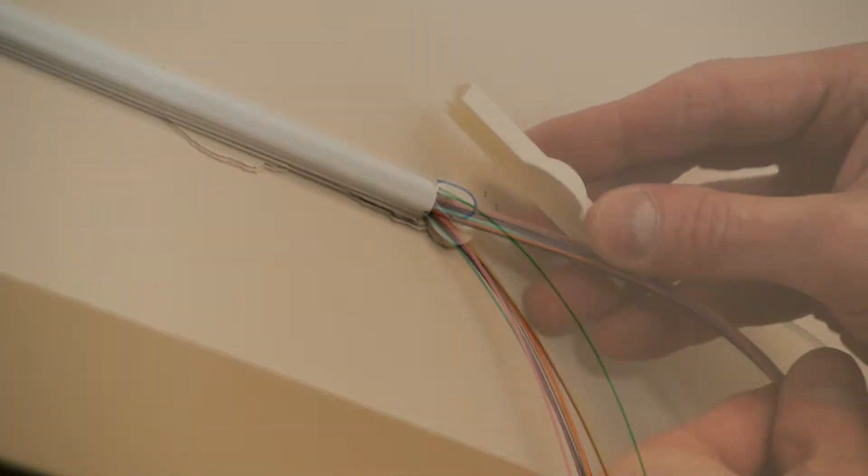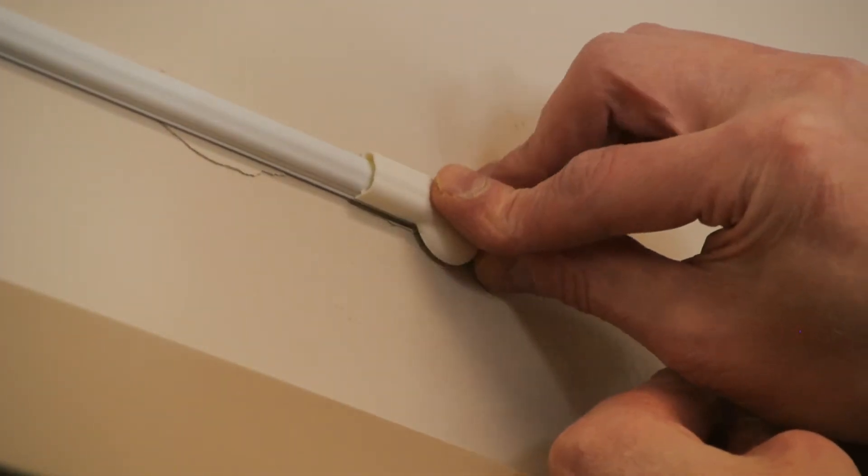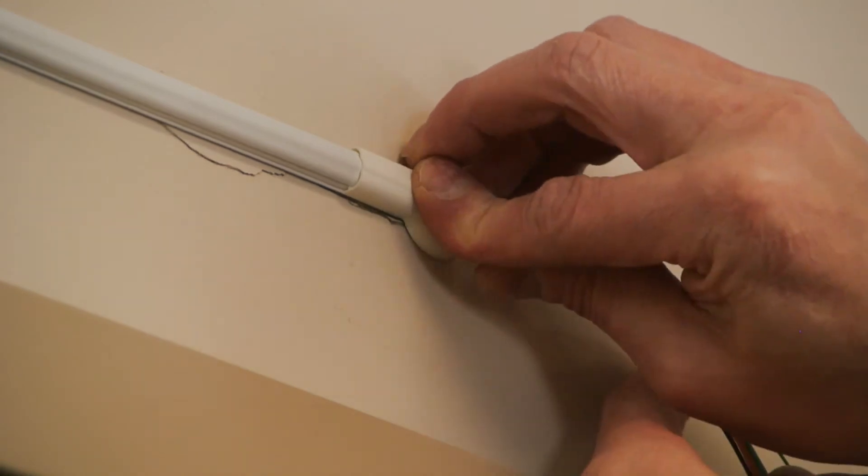Use the appropriate access deployment accessory to cover the fiber and fiber feed plug by snapping them onto the micro molding.